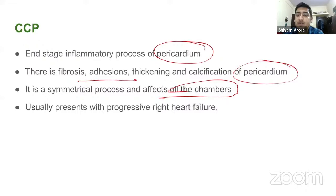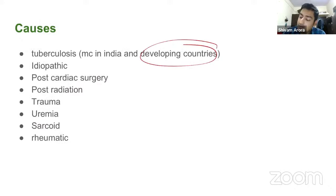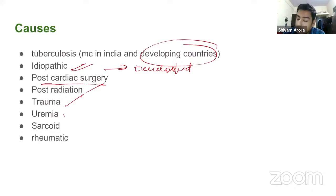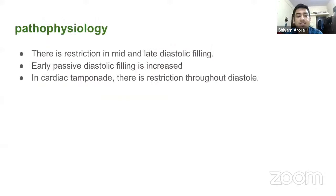The most common cause in developed countries is idiopathic. Other causes include post cardiac surgery, post radiation, trauma, uremia, sarcoidosis, and rheumatic disease. The pathophysiology involves restriction in mid and late diastolic filling, while early passive diastolic filling is actually increased.